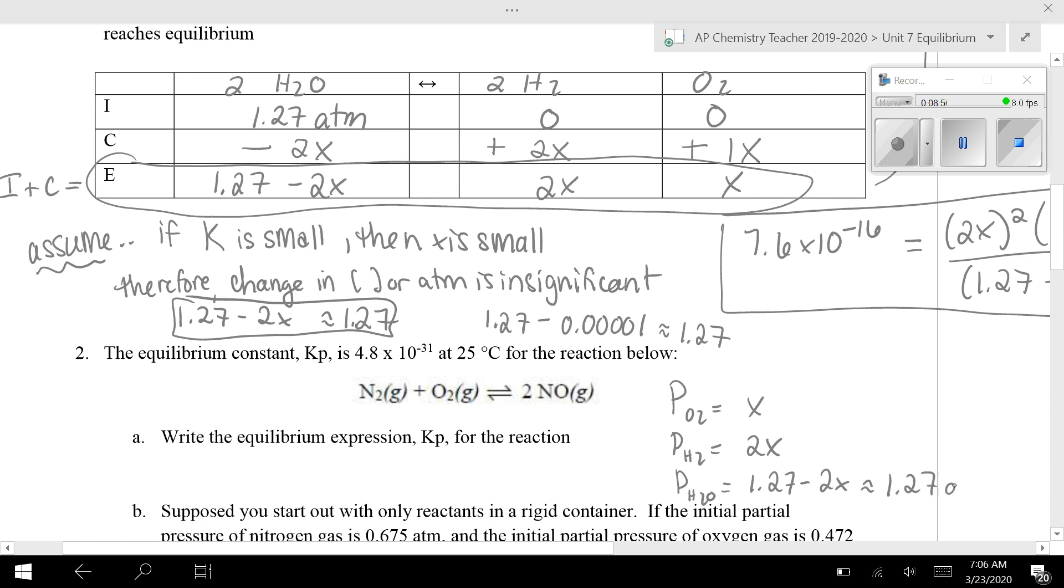And you should find that 2X is much, much smaller than 1.27. This is kind of a way to check your work to see if your assumption we made over here is good or not. If you do this subtraction here and find that X is actually a pretty big number, then maybe you goofed somewhere and you want to go back and check those assumptions that you made.